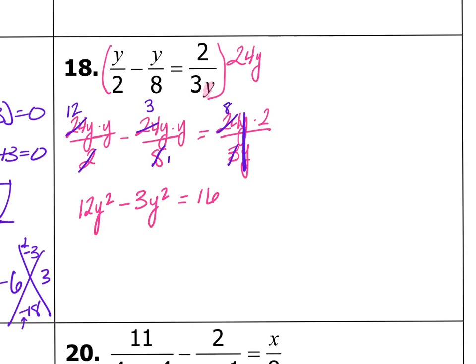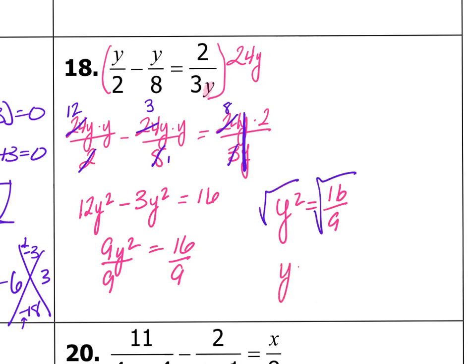So now I'm going to combine my like terms. So 12 minus 3 is 9y squared equals 16. Divide by 9. So I get y squared equals 16 over 9. How do I end a square? I square root. And if I square root one side, I've got to square root the other side. So y is going to equal plus or minus 4 thirds. And does that make my one denominator zero? No. So my answer is plus or minus 4 thirds. That was pretty easy because I only had a y squared.